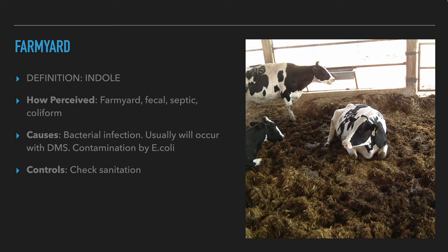The next aroma is the smell of farmyard or barnyard, or by its chemical name, indole. We perceive this as farmyard, barn, horse blanket, leather, old horse, wet dog and lots of other nice descriptions. If it appears in high levels, the causes of it will usually be infection by bacteria or Brettanomyces. Suggest to the brewer to check sanitation.